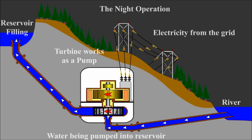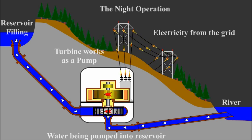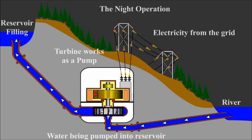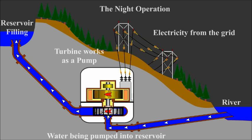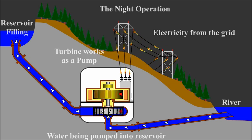Whenever there is a water source at high elevation flowing to low elevation, it is a prime candidate for hydropower generation, provided that the amount of water justifies the expense. For this reason, dams are always built on rivers in appropriate places to minimize the cost of their construction. When water is allowed to flow to low elevation by passing through a water turbine, this potential energy is converted to electricity.